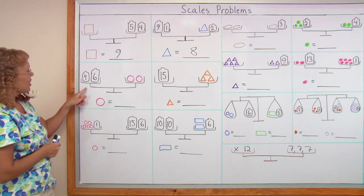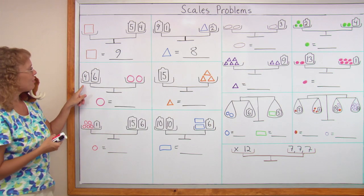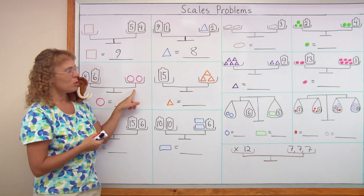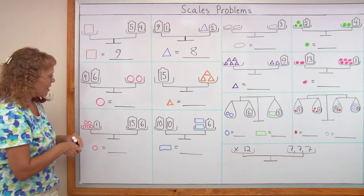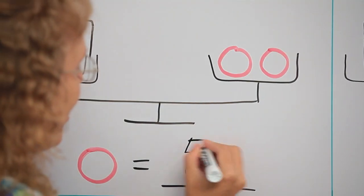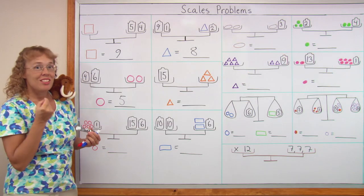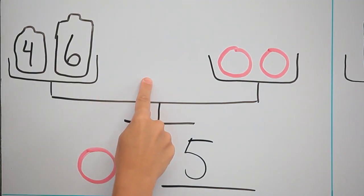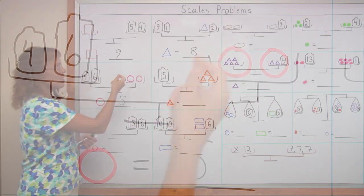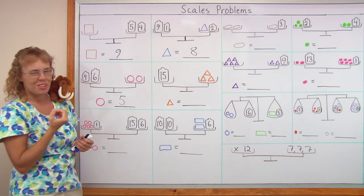On this one, on this side we have 10, right? 4 plus 6 equals 10. On this side we have 2 circles. So 1 circle must equal 5. Yeah, you got it. This is easy. As an equation, this would be 4 plus 6 equals 2 times an unknown, 2 times x, 2 times a circle.